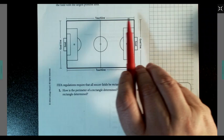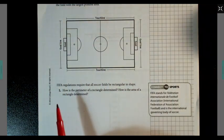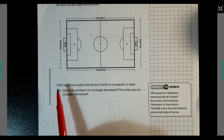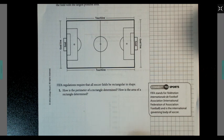She would like to mark the field with the largest possible area. Touchlines are the sides, goal lines are behind the goal. FIFA regulations require that all soccer fields be rectangular in shape. So it means the lengths have to be the same measure and the widths have to be the same measure. Number one: How is the perimeter of a rectangle determined? How is the area of a rectangle determined?